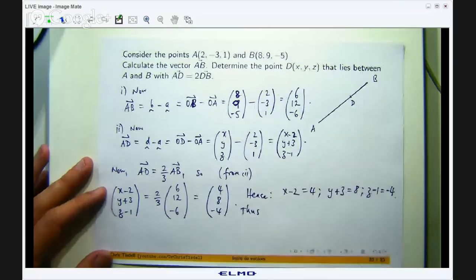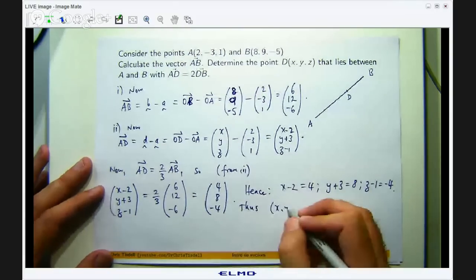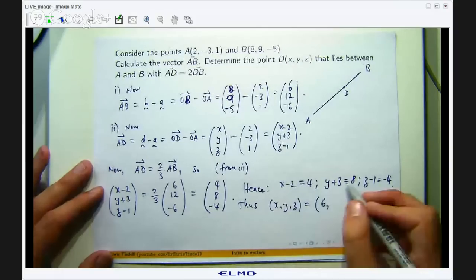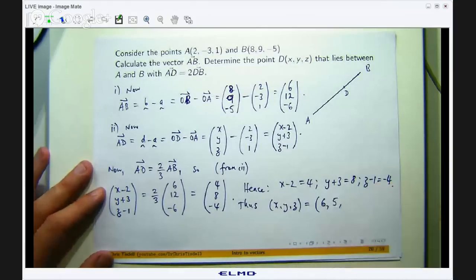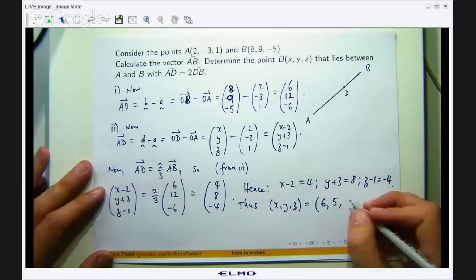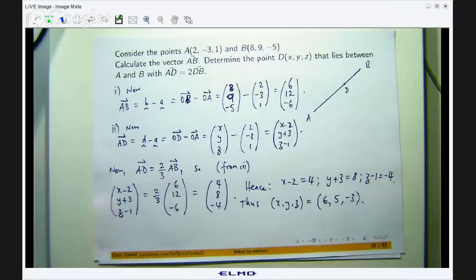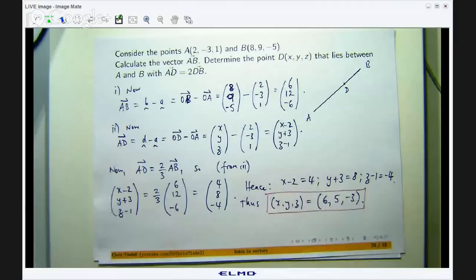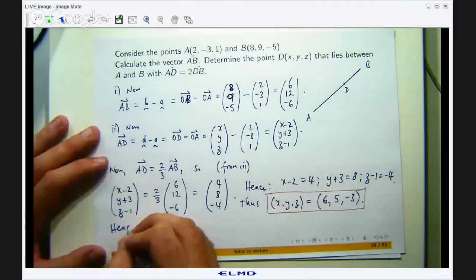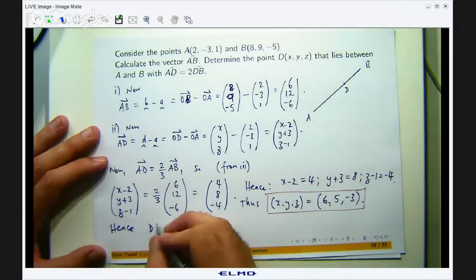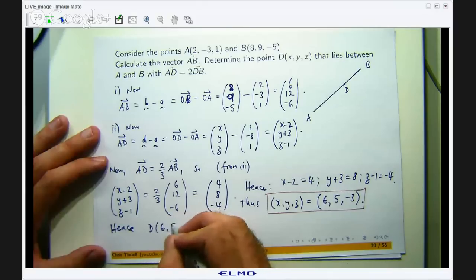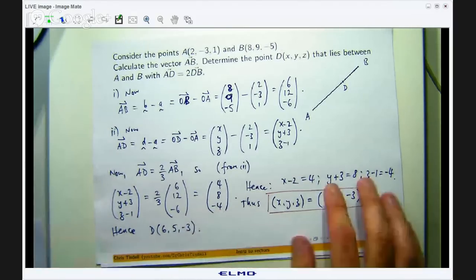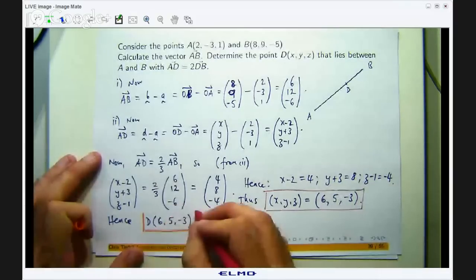Okay. Thus, what am I going to have? Well, X is going to be 6, Y is going to be 5, and Z is going to be negative 3. Okay. Now, how do I know? Well, let me write down the conclusion. D is just 6, 5, negative 3.